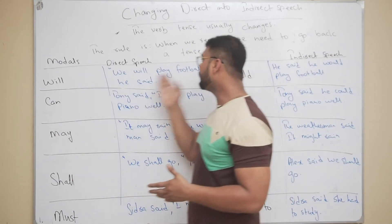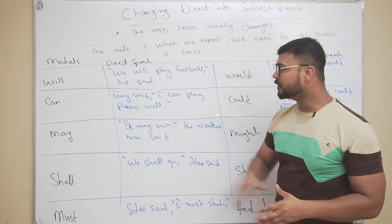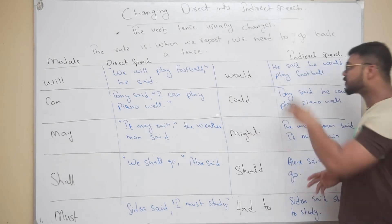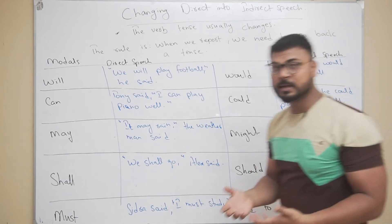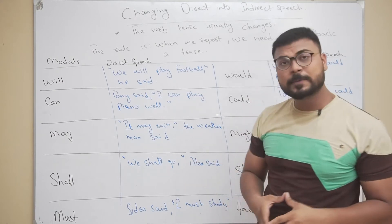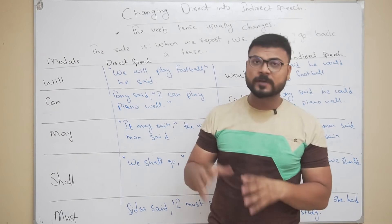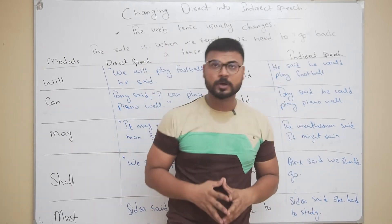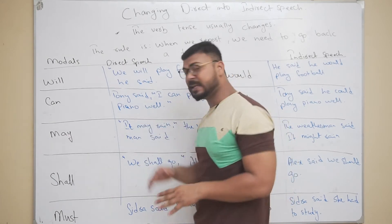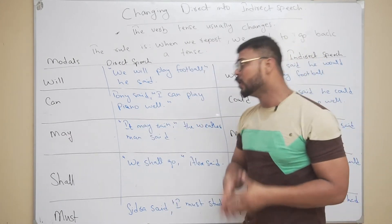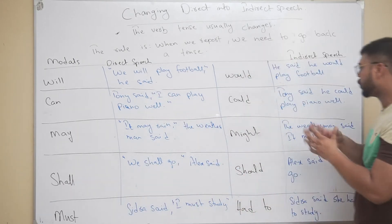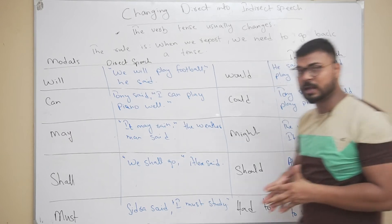Examples for modal changes: 'We will play football,' he said — becomes: he said he would play football. For 'can': 'I can play piano well,' Tony said. Remember, if the statement is still true, you can keep the same tense. So you can say Tony said that he can play piano well, or Tony said he could play piano well — it depends on the situation.